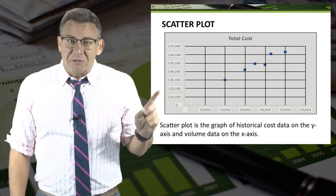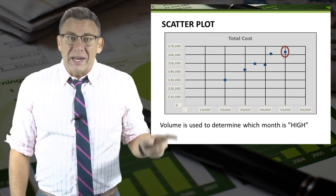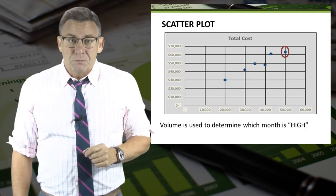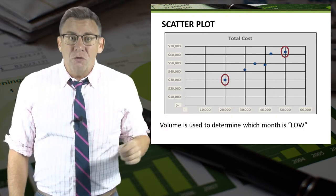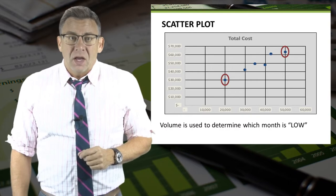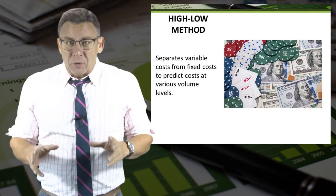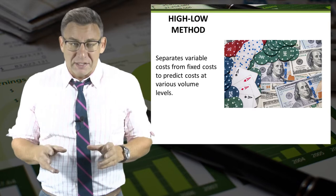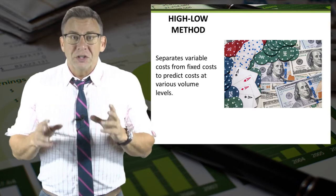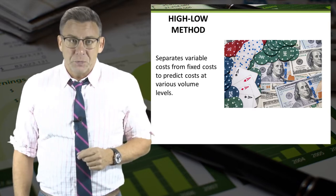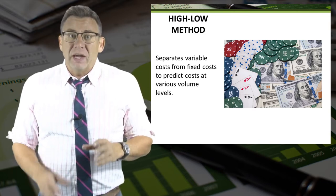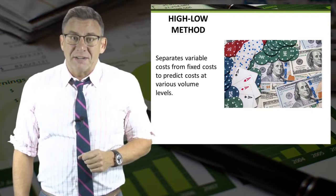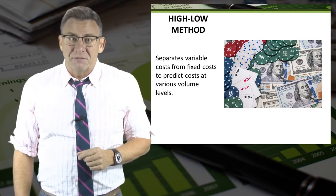Using the data from a scatter plot, we can easily identify the high-volume data and the low-volume data. The high-low method separates variable costs from total costs to determine fixed costs. Then we can construct the cost equation and predict costs at various levels of volume.